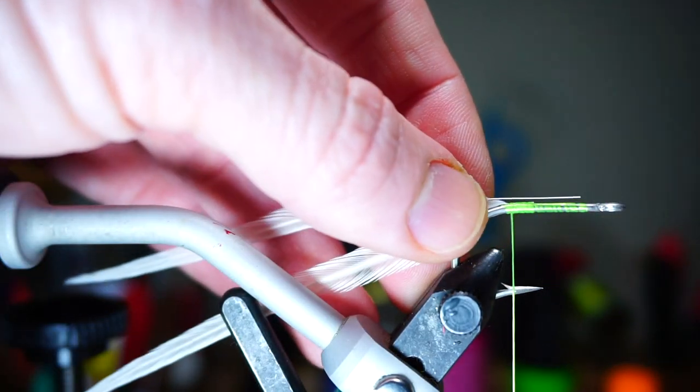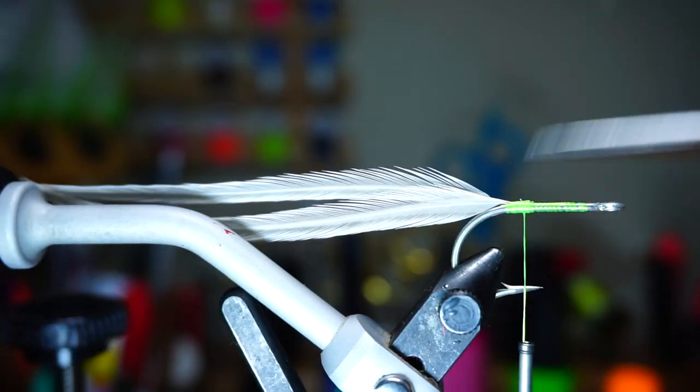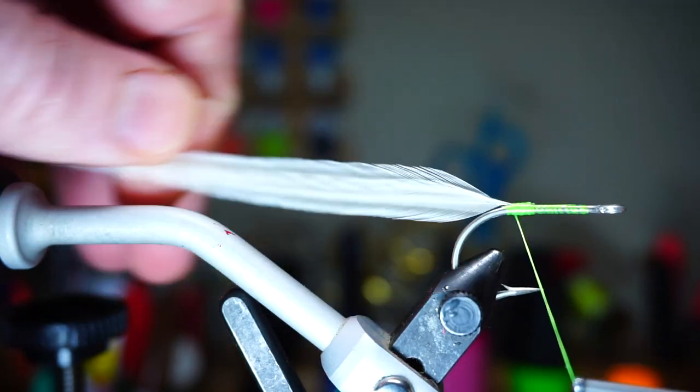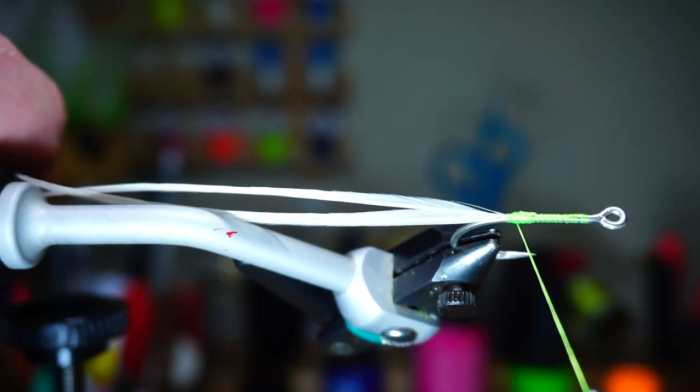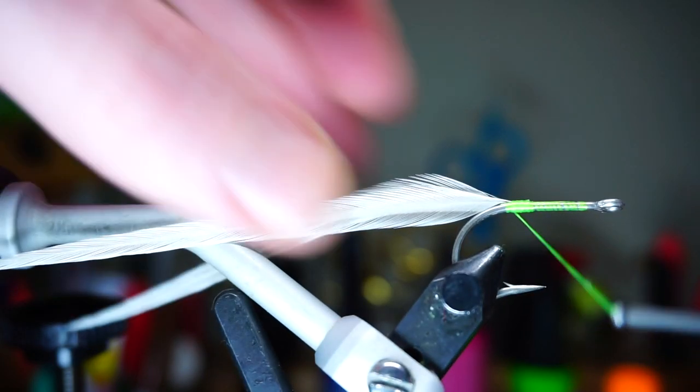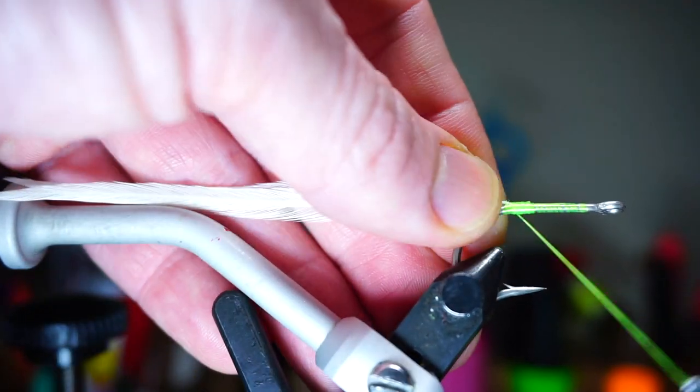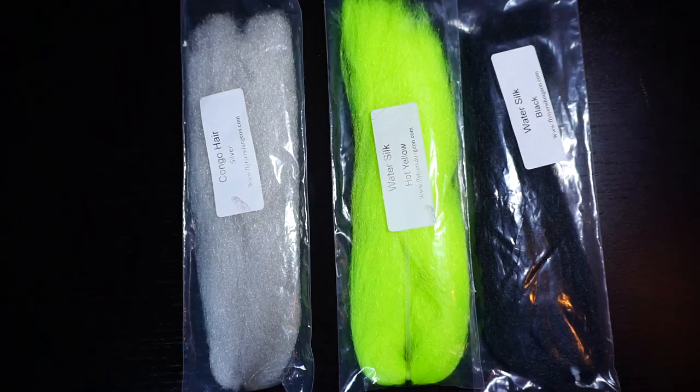Now do the same thing with the other feather, but with this feather make sure and align the tips. You can see here how the feathers get tied in slightly split, which is fine as long as they are even while looking straight on the side. I like to have a couple wraps under the feathers to ensure they stay upright a little.